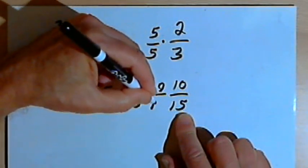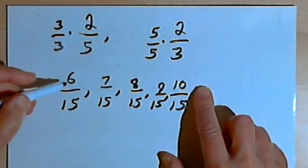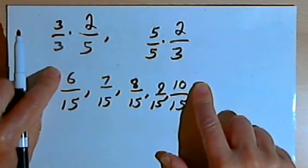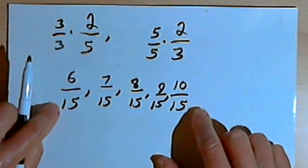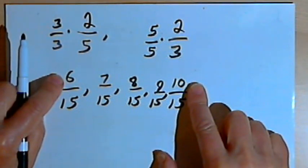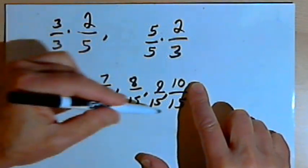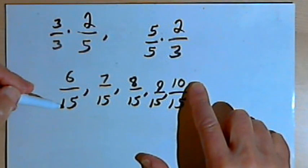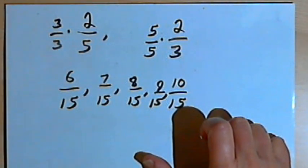and 9 over 15. Now this worked out nicely because the two fractions I had, 2 over 5 and 2 over 3, which became 6 over 15 and 10 over 15, were far enough apart that I could fit three more fractions in between, all with the same denominator. That won't always happen, so let's look at what happens when you can't fit those three fractions in.